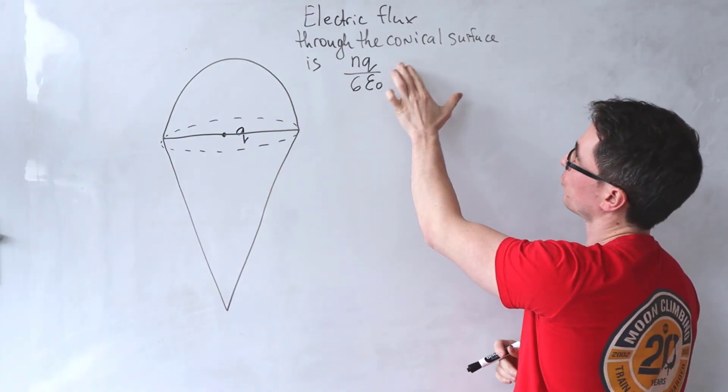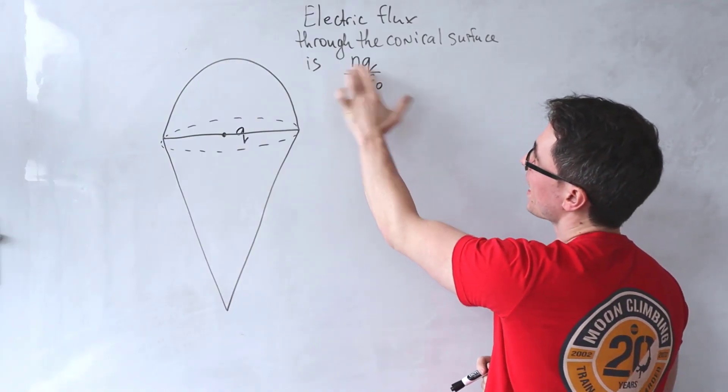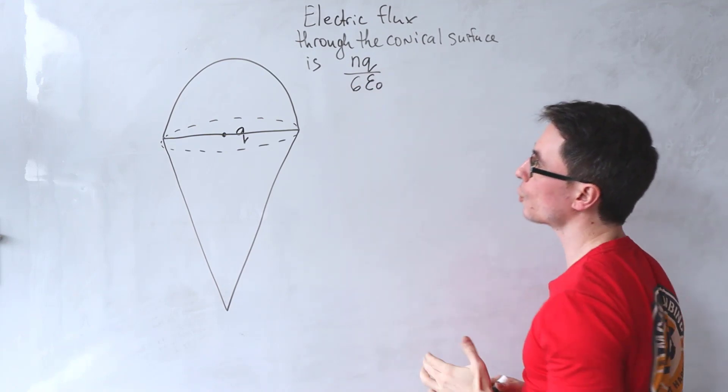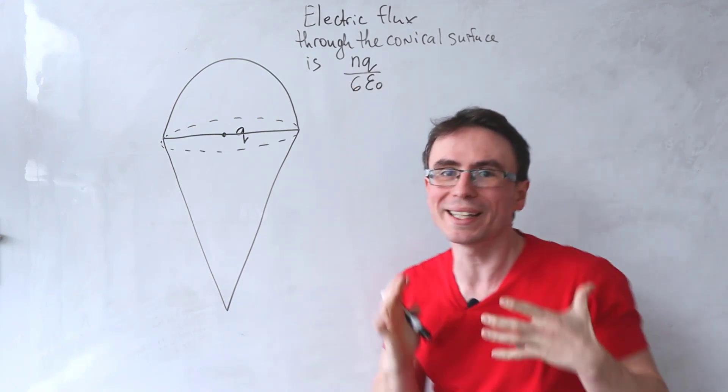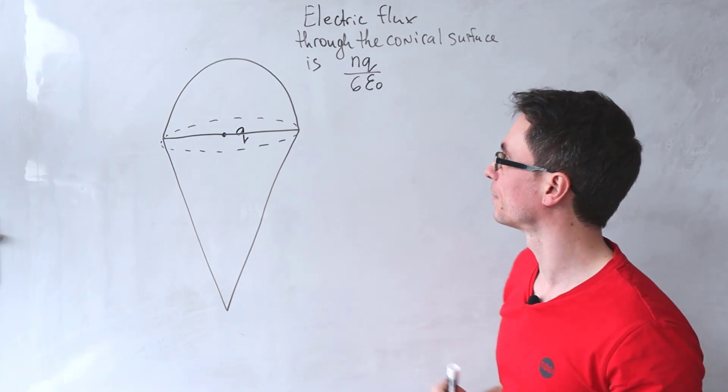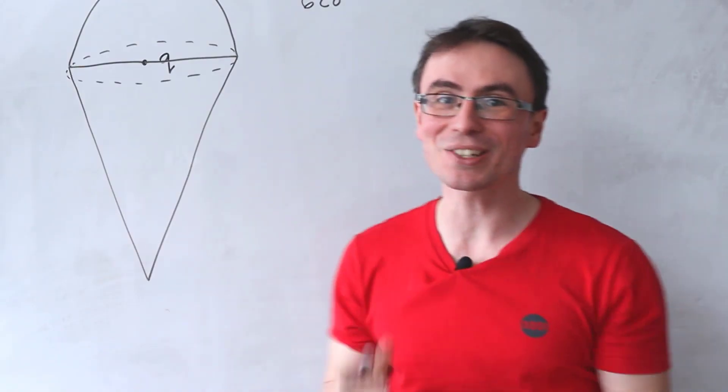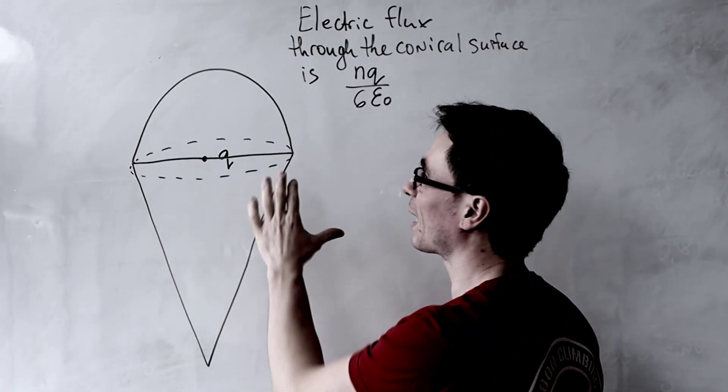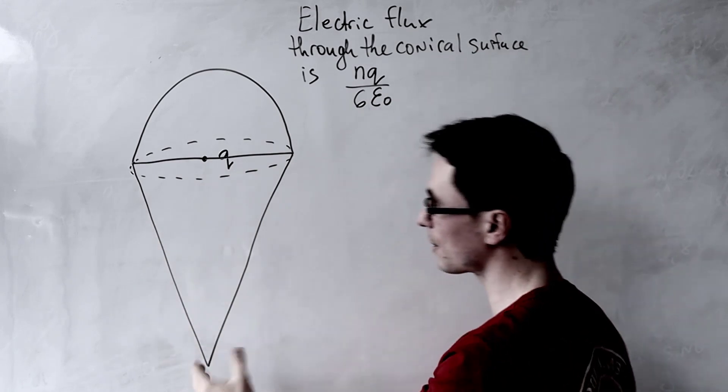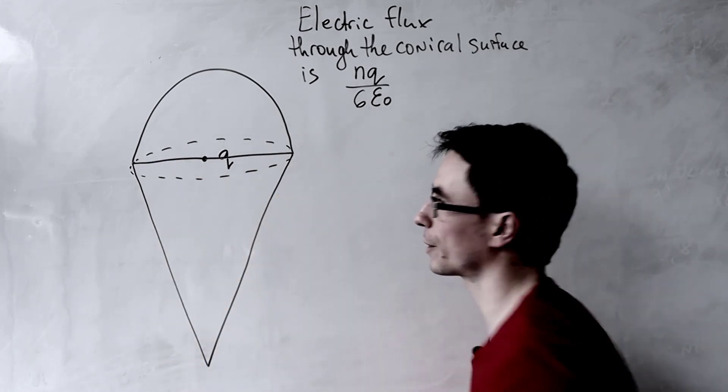We're given that the electric flux through the conical surface is NQ over 6 epsilon naught, and what we need to do is figure out N. Now on first inspection this question gave me the fear because I thought I'd have to do some sort of complicated surface integral across this conical surface.